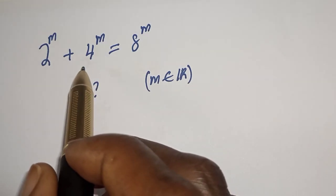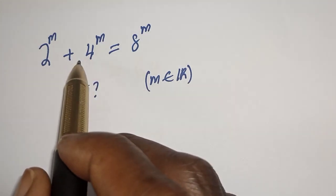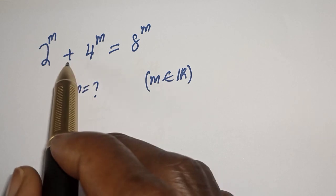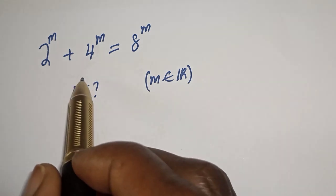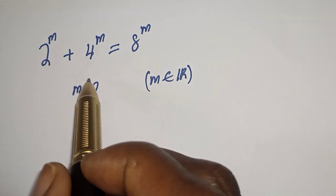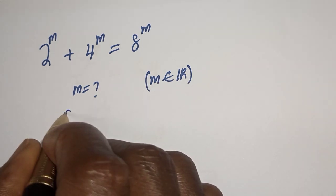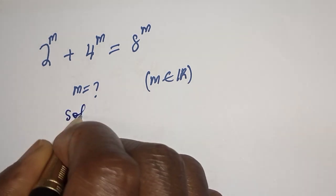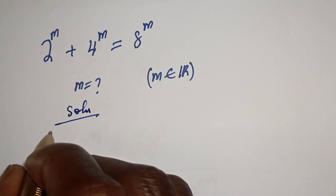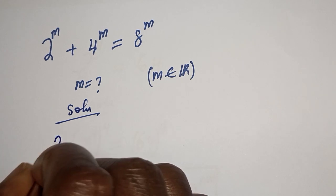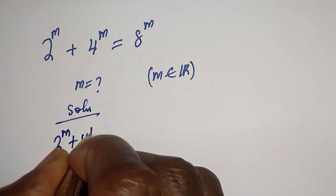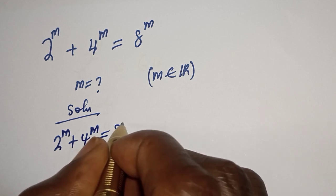Hello, welcome to Math Gist. In this class, we want to find the value of m from this given nice olympiad exponential equation. Like, share, comment, and subscribe. We have the given equation: 2 raised to power m plus 4 raised to power m is equal to 8 raised to power m.